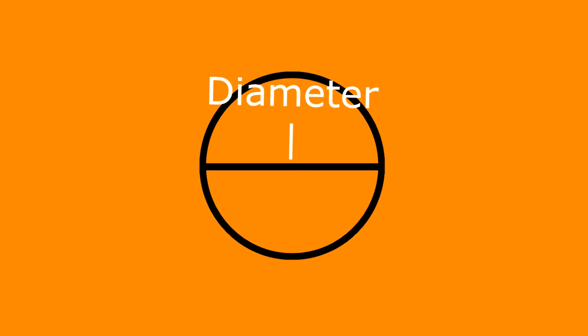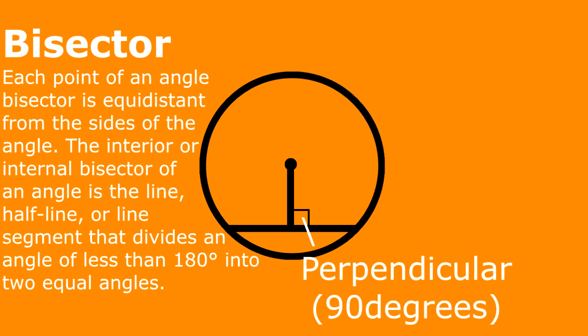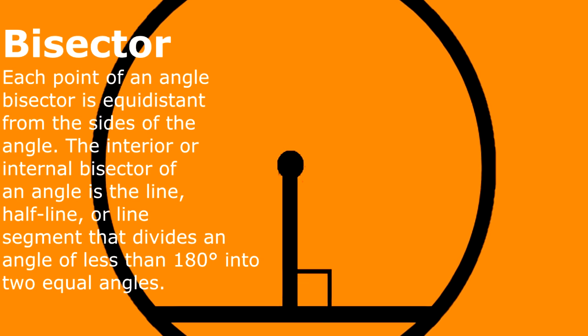Starting off. A chord is a line that lies anywhere below the diameter that goes from one side to the other of the circle. In this image, the perpendicular bisector of the chord passes through the centre of the circle.